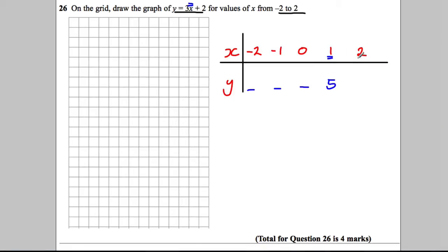Here, if you put in 2 into here, 3 times 2 is 6, add 2 equals 8. Put in 0, 3 times 0 is 0, add 2 equals 2.